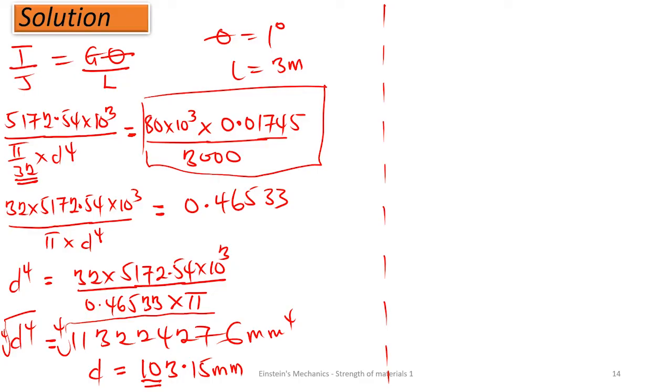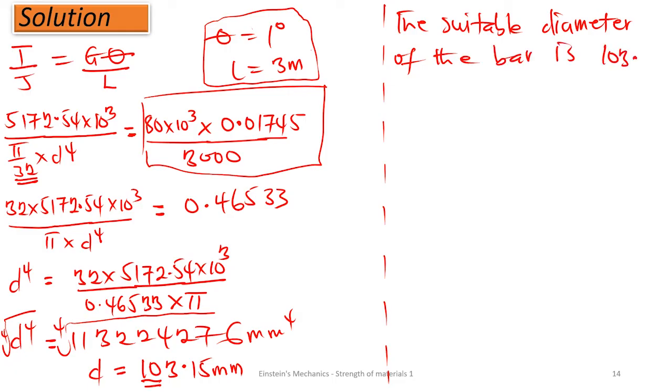Since the question restricted us that the degree of rotation should not go beyond the limit, we are going to obey the one with the restriction. In that case, the suitable diameter of the bar is 103.15 mm. This is the diameter we are required to use. Diameter 1 was 76 from the stress condition, but using the twist constraint where we cannot exceed the limit, we use this diameter.